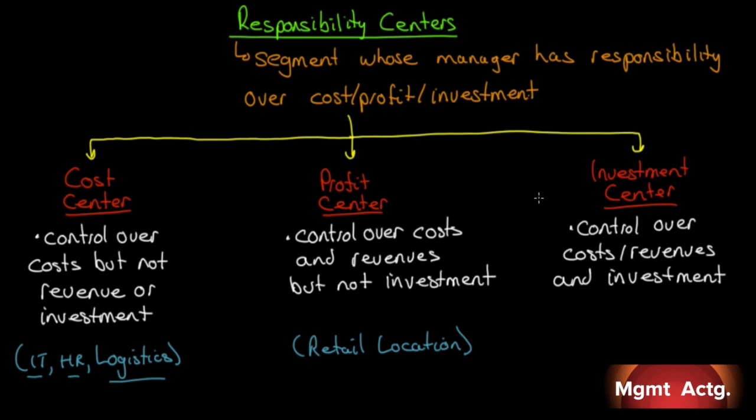So, with these different types of responsibility centers, how do we measure the performance? Since we already know how to do it with the profit center, we have the contribution format income statement. We know how to break down costs into traceable fixed costs and common fixed costs. So, we can get very close to measuring the performance of a profit center. But what happens when we get to an investment center and the manager has responsibility over investment? That leads us right into our next learning objective. I'll see you in that video.